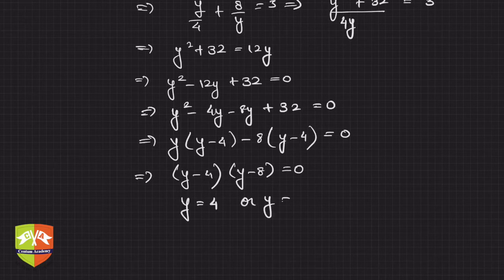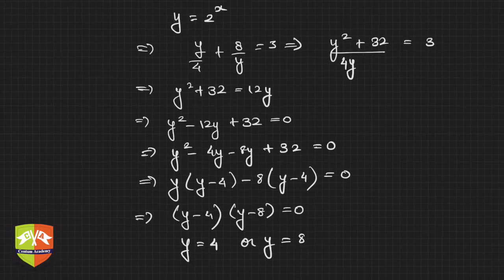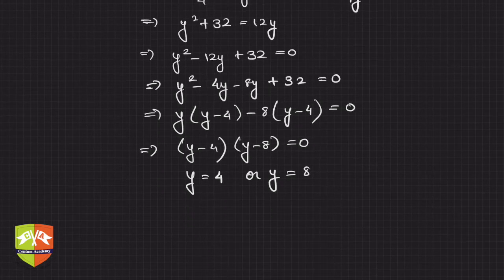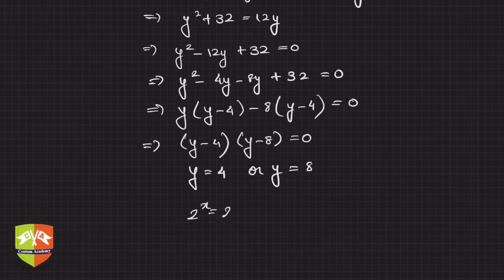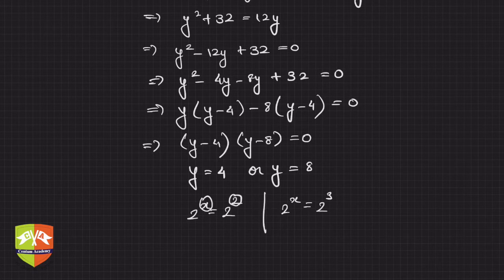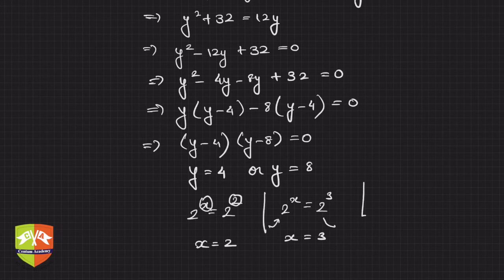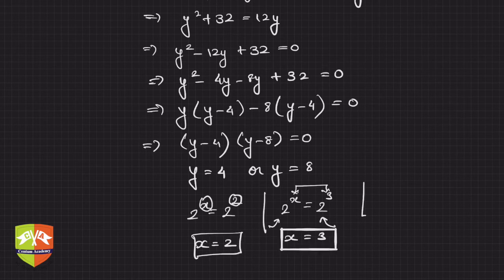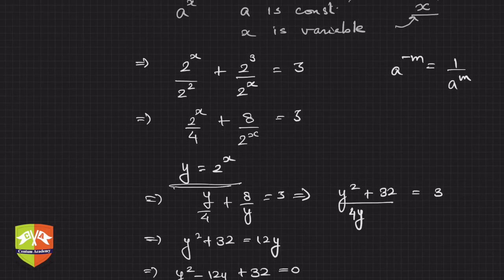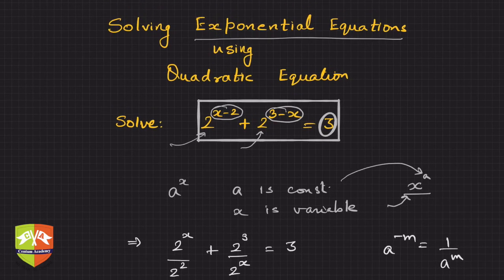So y equals 4 or y equals 8. But we want x, not y. Recalling that y equals 2 to the power x: when y equals 4, we have 2 to the power x equals 2 squared, so x equals 2. When y equals 8, we have 2 to the power x equals 2 cubed, so x equals 3. Since the bases are the same, we equate the exponents. Hence the two roots are x equals 2 and x equals 3 — exponential equations can be reduced to quadratic equations and solved.